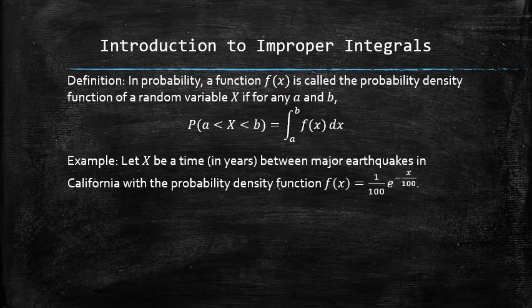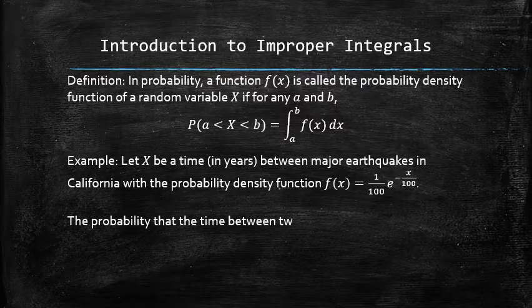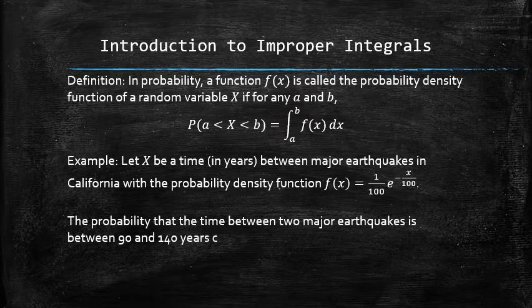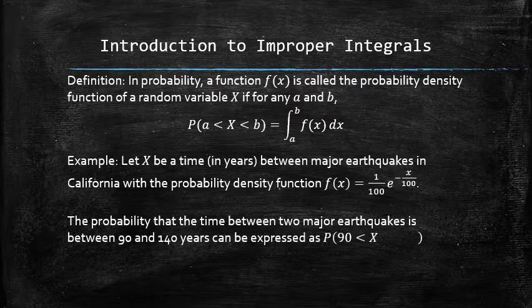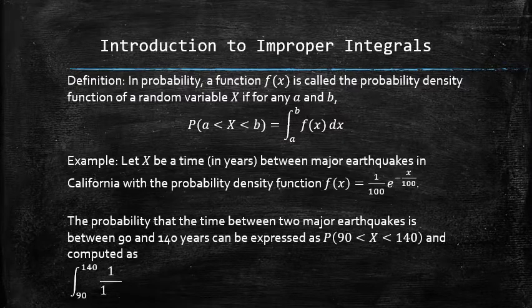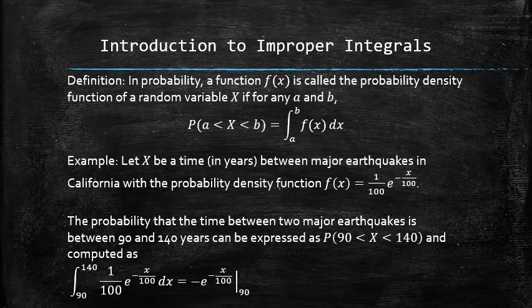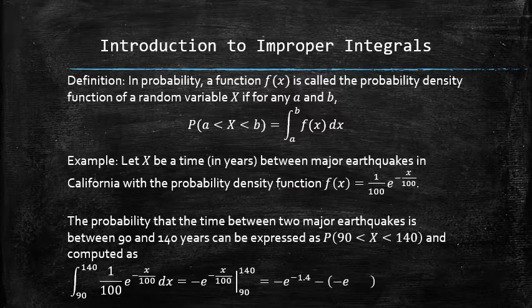The probability that the time between two major earthquakes is between 90 and 140 years can therefore be written as the following expression and computed as the following definite integral with the lower limit 90 and the upper limit 140 of the probability density function.